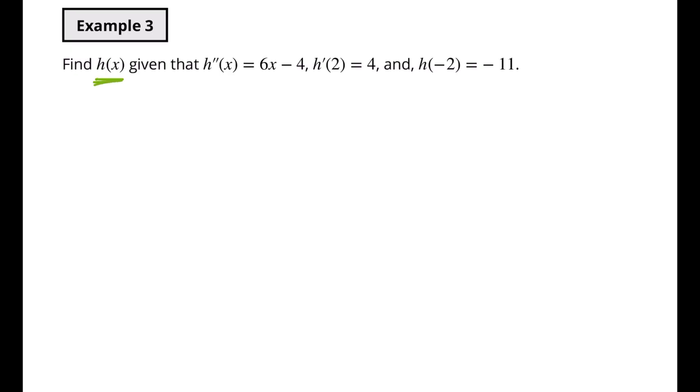Those two examples are fairly straightforward. Now we're going to look at probably the most complex version of this type of question. We're trying to find h of x and we're given the second derivative of h. That means we have to do multiple layers of integration to find multiple C values — the second derivative, then the first derivative, and then the original function where putting negative 2 in gives negative 11.